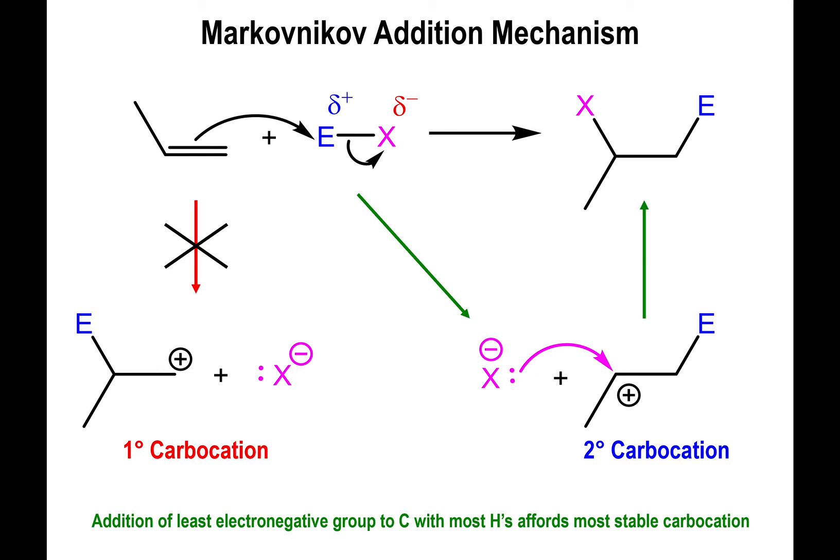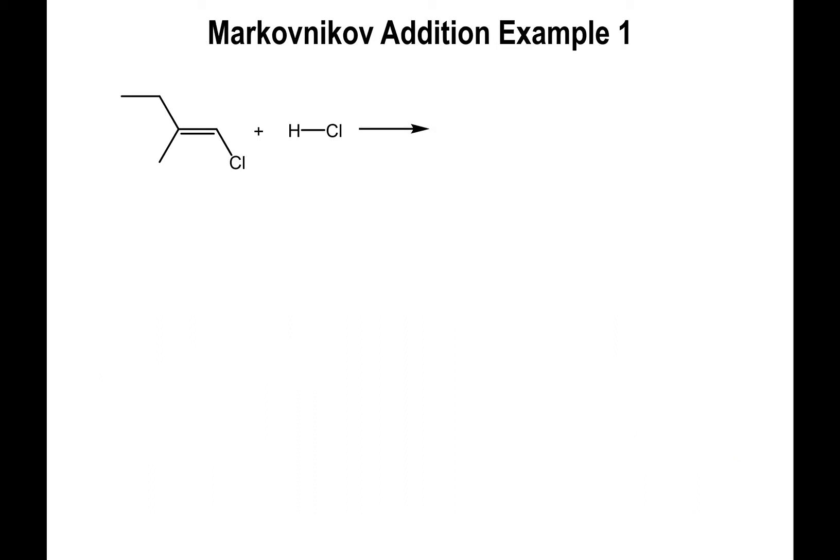And as stated down here, it's all due to the formation of the most stable carbocation. To give you some concrete examples, we could start with the alkene shown right here, reacting with HCl, a strong acid. Now between hydrogen and chlorine, hydrogen is least electronegative, so the alkene will attack the hydrogen.